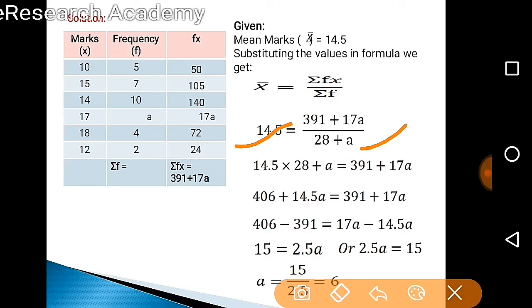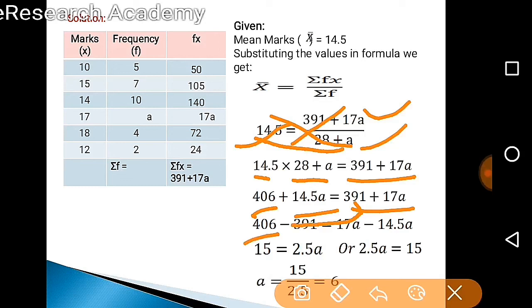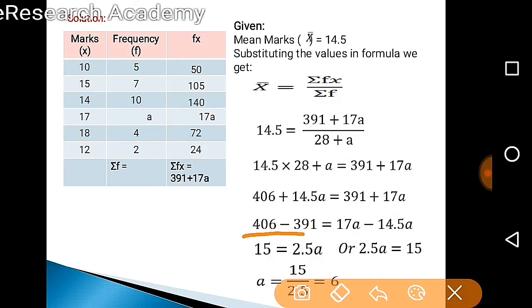We need to cross multiply it. While cross multiplying, this term goes with 14.5 times 28 plus A equals 391 plus 17A. This gives you 406 plus 14.5A equals 391 plus 17A. Now bring 391 with 406 and carry 14.5 with 17A. So 406 minus 391 equals 17A minus 14.5A.